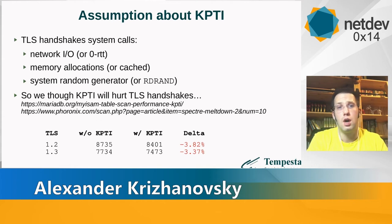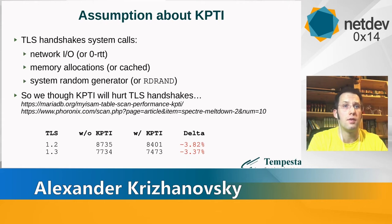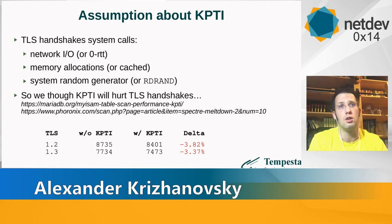Speaking about recent CPU vulnerabilities: we assumed that KPTI would impact performance a lot. However, we observed no more than 4% performance degradation with KPTI enabled. This is quite different from what MariaDB observed — up to 40% performance degradation with KPTI. The reason is that TLS handshakes don't involve as many system calls, whether for network I/O, memory allocation, or random number generation.